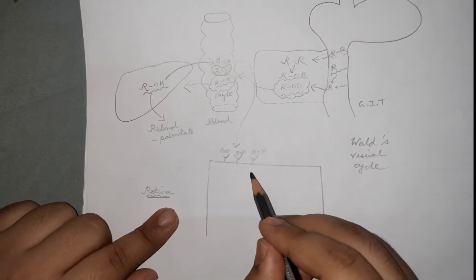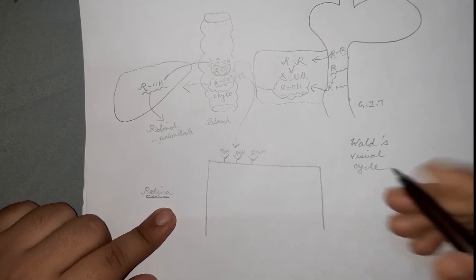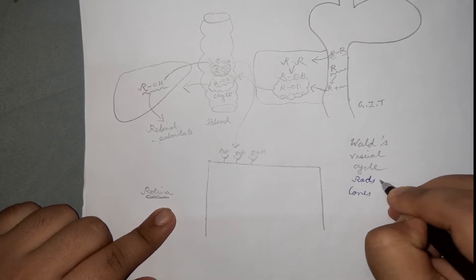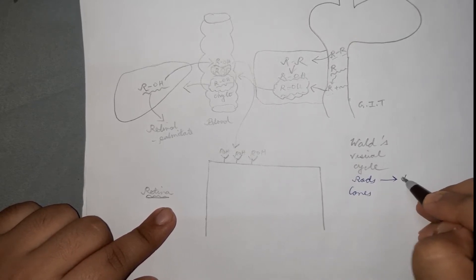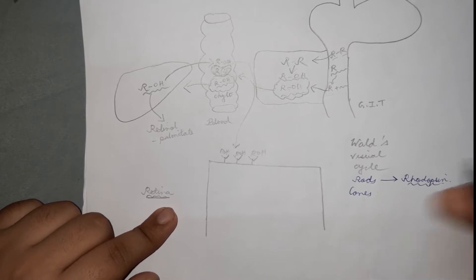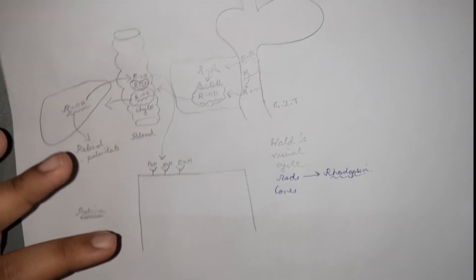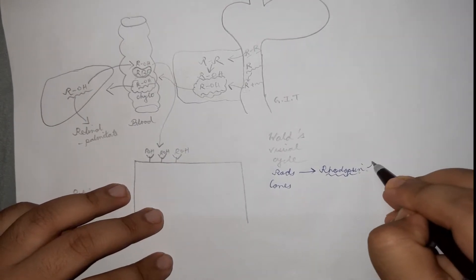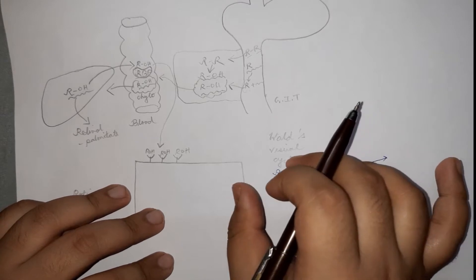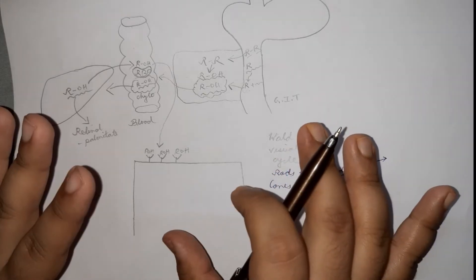In the retina, you have two types of cells — rods and cones. Rods have a very interesting pigment called rhodopsin. Biochemically, rhodopsin is a conjugated protein — a protein conjugated with a non-protein part. The non-protein part is vitamin A, but not retinol — it's a different form of vitamin A.